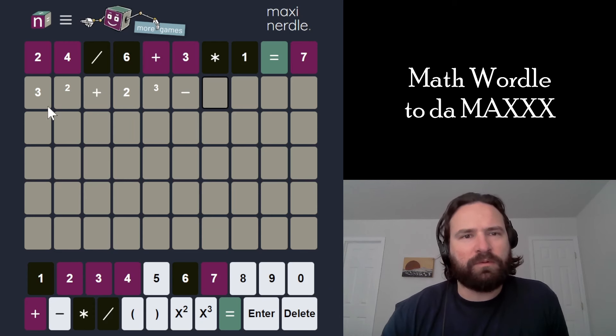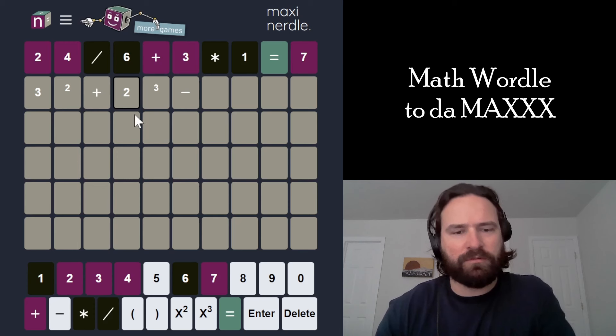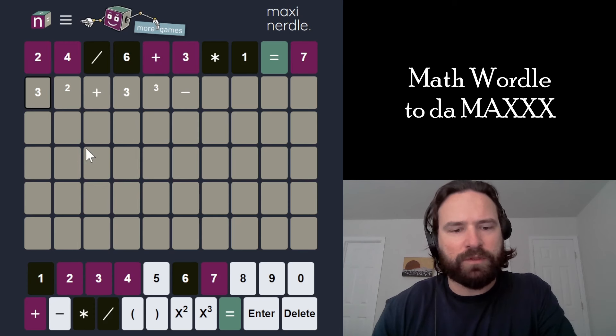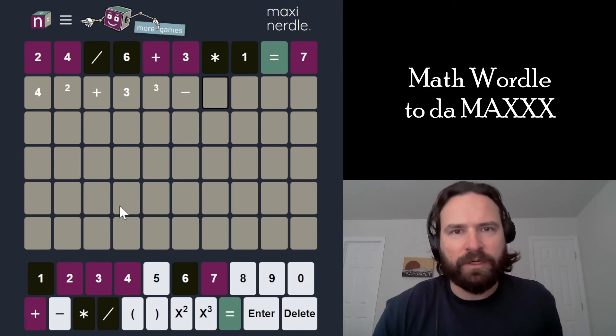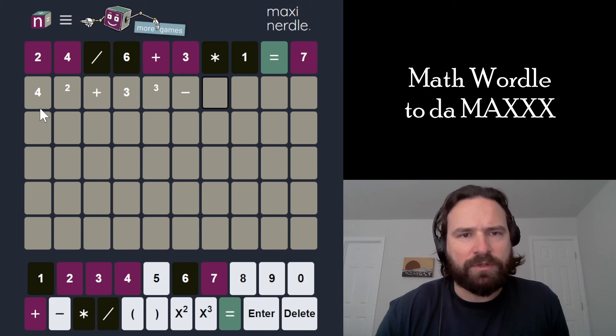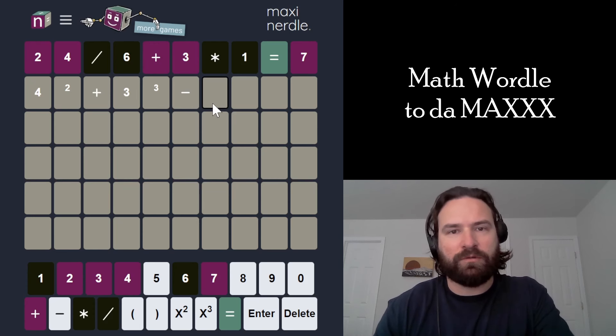If I did 3 cubed, it would get a little bigger because this is only 17. So let's do 3 cubed and 4 squared just to make the numbers a little bigger. And then I can subtract. So 16 plus 27 is 43. And now I can subtract something in the 30s. 32 equals 1.